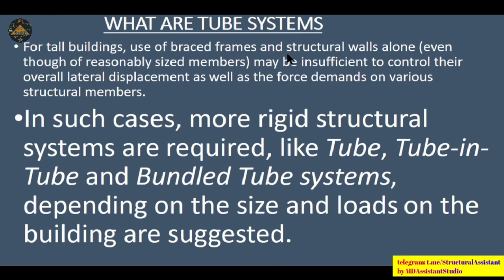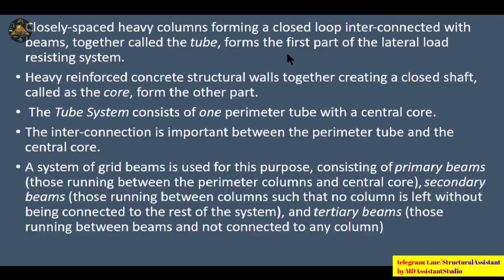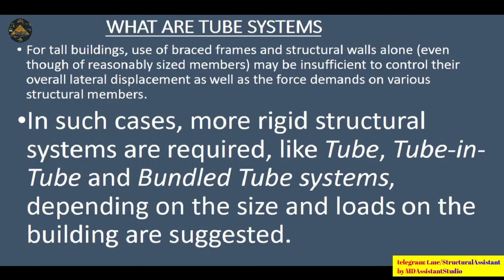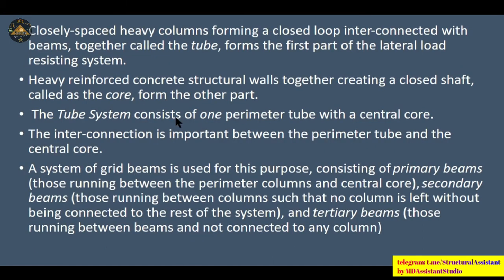For tall buildings, use of brace frames and structural walls alone may be insufficient to control overall lateral displacement and forces in structural members. In such cases, more rigid structural systems are required, such as tube, tube-in-tube, and bundle tube systems, depending on the size and loading of the building. There are three basic tube systems: tube, tube-in-tube, and bundle tube. Closely spaced heavy columns forming a closed loop interconnected with beams is called a tube.